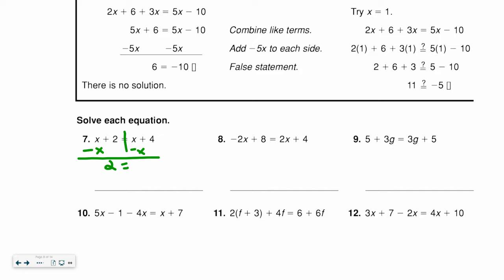So this one is special, because when I combine my x's, they go away. They cancel each other out. And I get 2 equals 4, which is not true. So if that happens, there are no solutions.